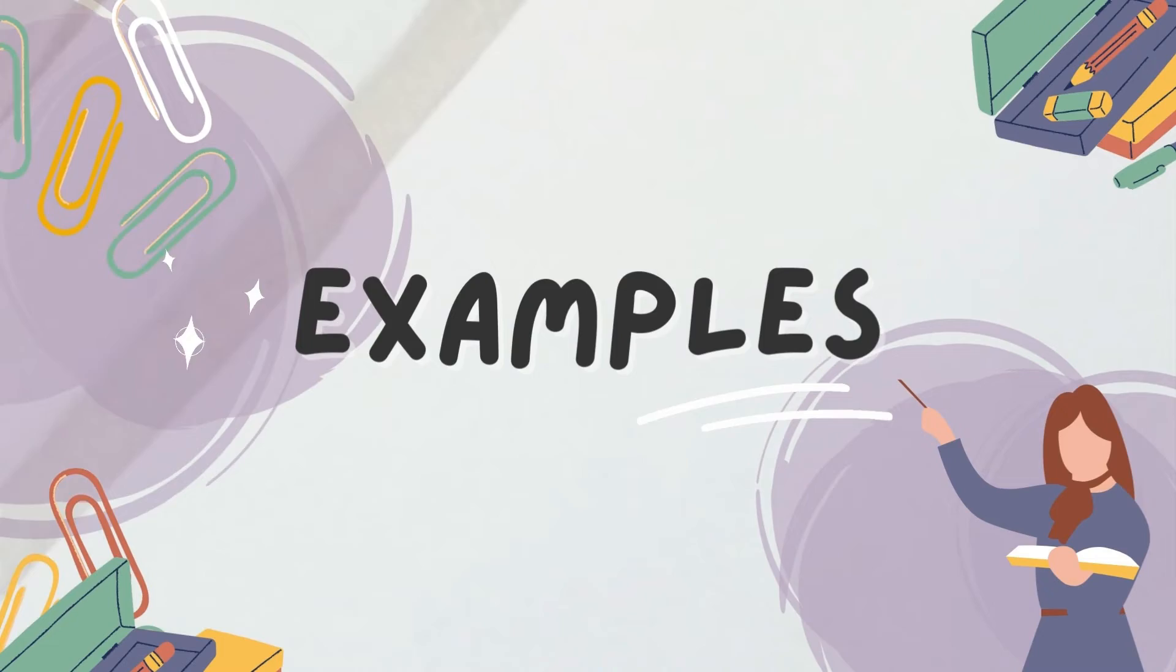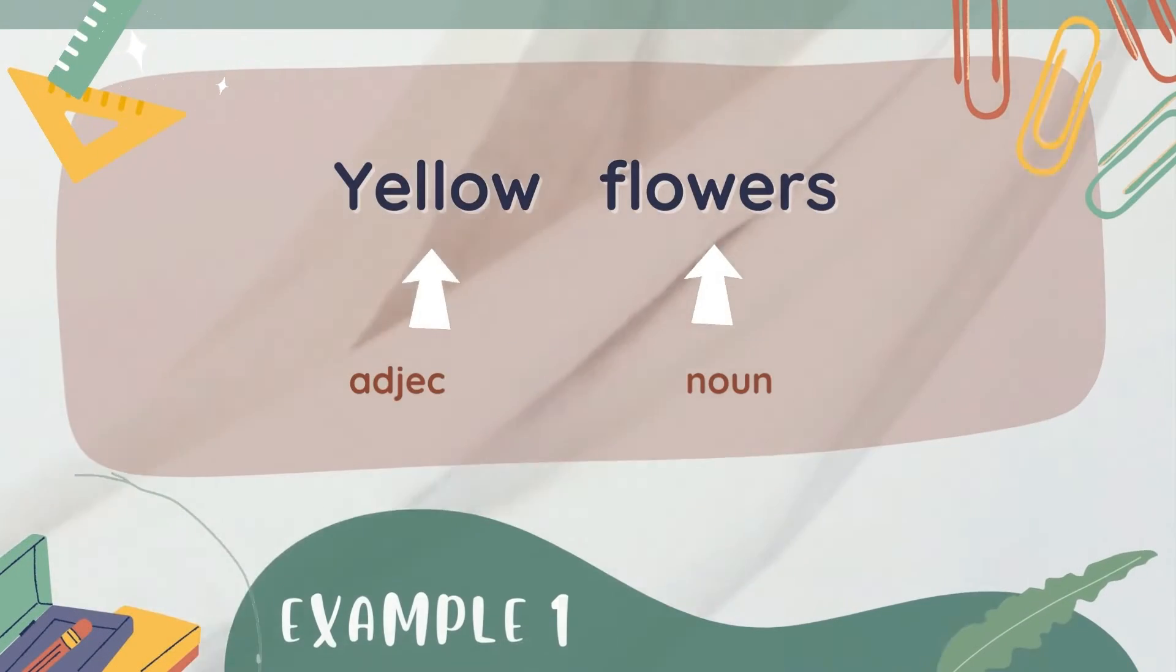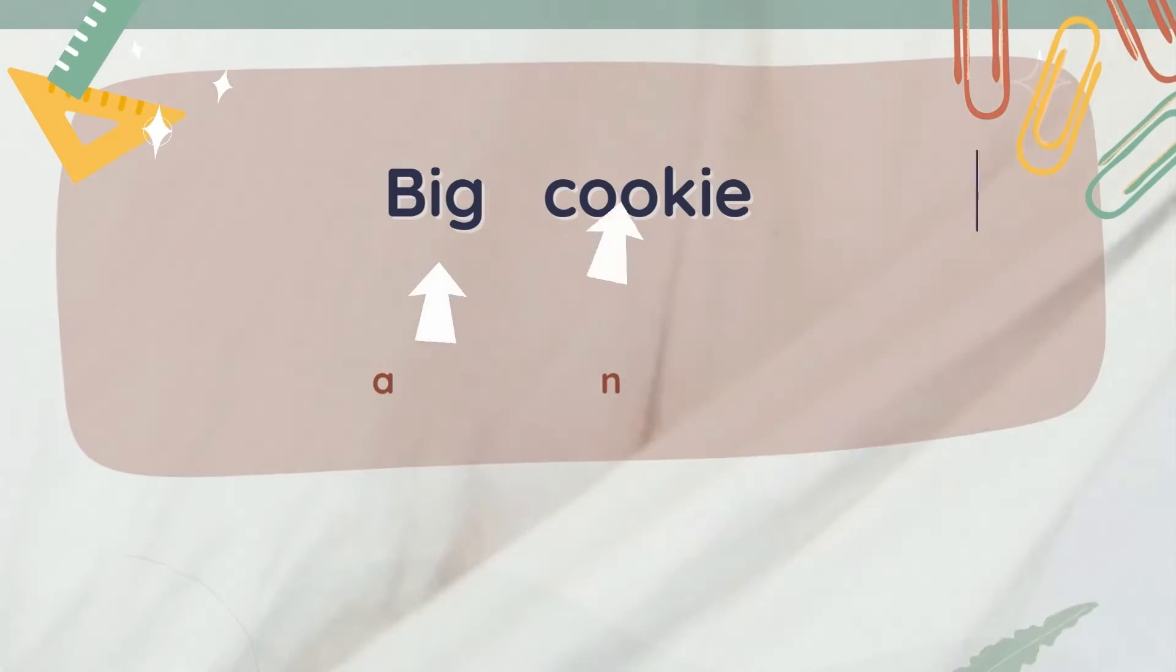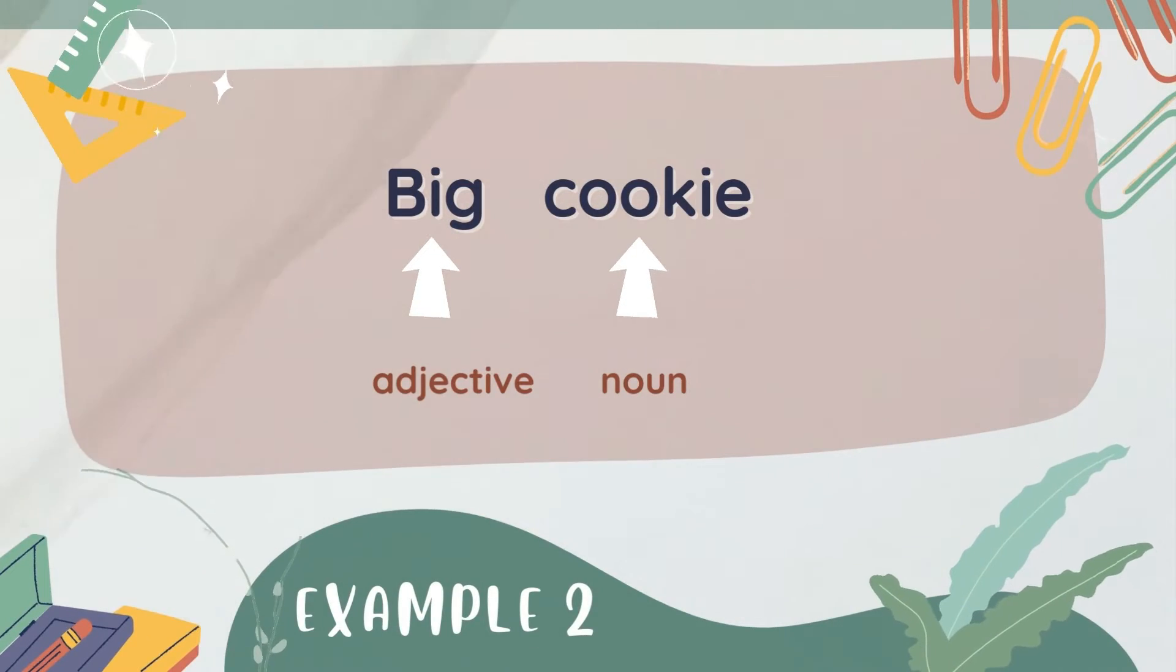For examples, yellow flowers. Yellow is an example of adjective while flowers is an example of noun. Big cookie. Big is an example of adjective while cookie is an example of noun.